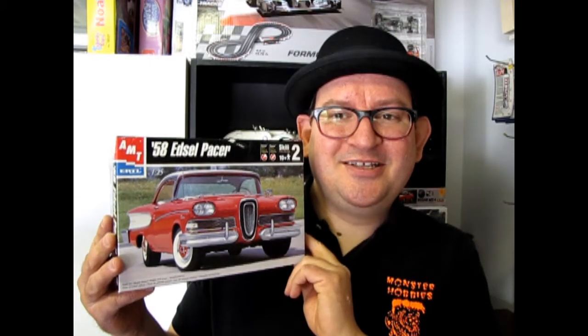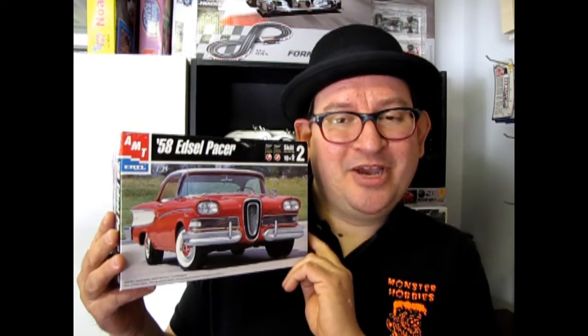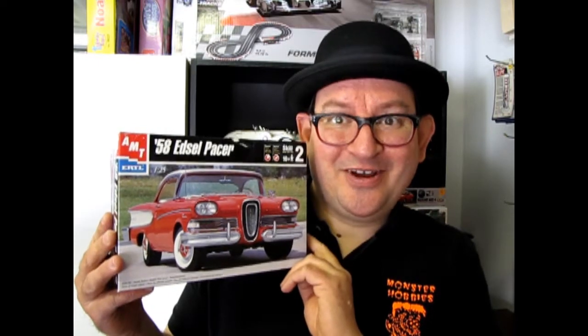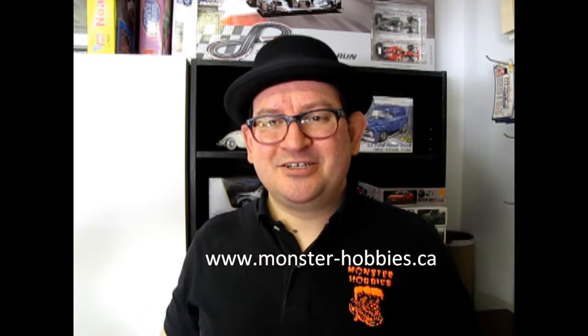Well, I hope you enjoyed that episode of Monster Hobbies, What's in the Box, where we got to see the 1958 Edsel Pacer, Ford's idea of a competitor to Buick, believe it or not. Now if you would like to see what other amazing model kits I have available for sale, check us out at www.monster-hobbies.ca. Don't forget to subscribe to us here so you can check out our channels and ring that little bell so you get your notifications. Check out these three other amazing unboxing videos, and until next time, keep dreaming of the space age.